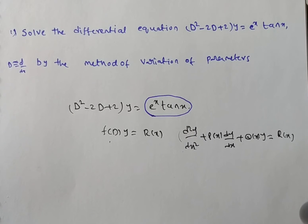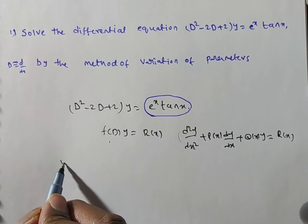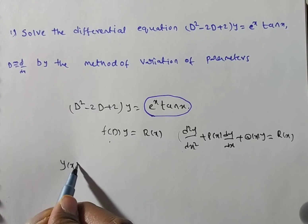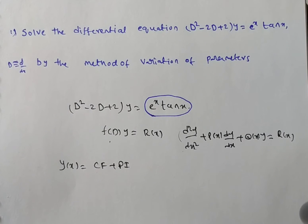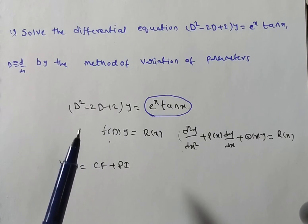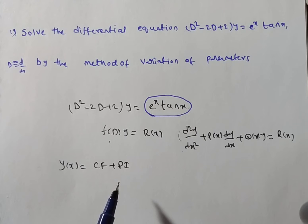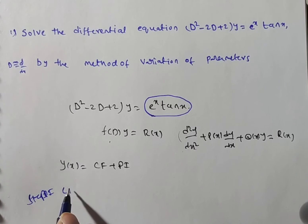The general solution for this higher-order differential equation is y(x) = complementary function + particular integral. The complementary function is found the same way as in general or shortcut methods, but the particular integral in variation of parameters depends on the complementary function.